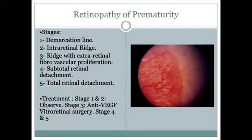Retinopathy of prematurity: when a child is premature, 100% oxygen is given for lung development. When the 100% oxygen is removed and the infant returns to a normal 97% oxygen environment, the body perceives relative hypoxia and responds with anti-VEGF signaling, stimulating new vessel formation.